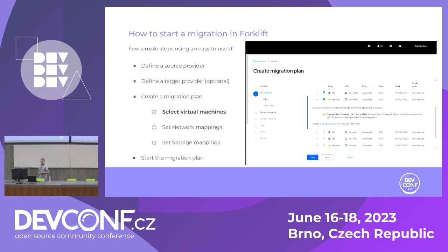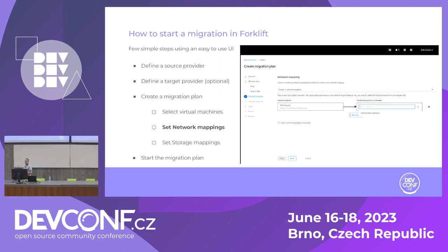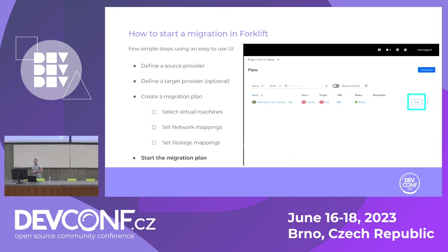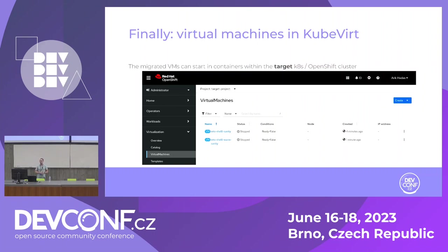Once we do that, we click Next and see a list of virtual machines in the source provider, along with information users need before triggering migration. We select the VMs we want to migrate and click Next. This takes us to the network mapping view, where we map networks from the source provider to networks on the target provider. With a similar interface we define the storage mapping — mapping storage domains, devices, types, and data stores to storage classes on the target OpenShift cluster. Then we start the plan and once done, the migrated VMs appear in the target namespace.